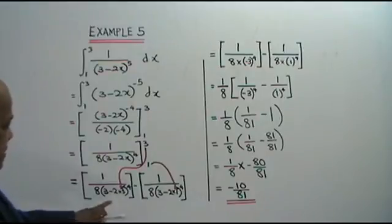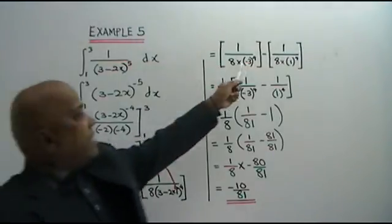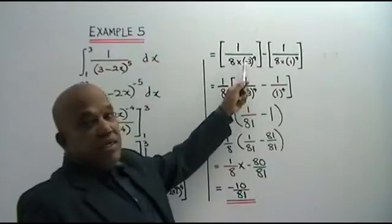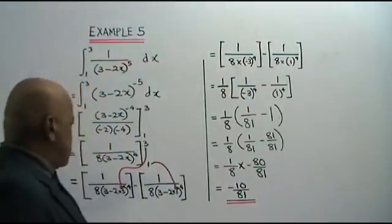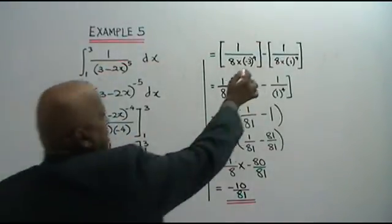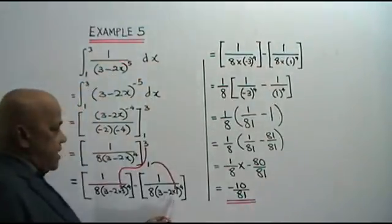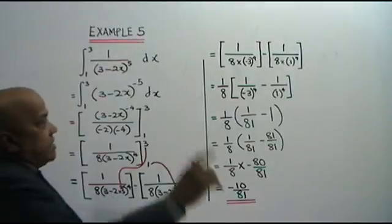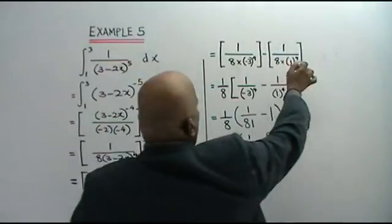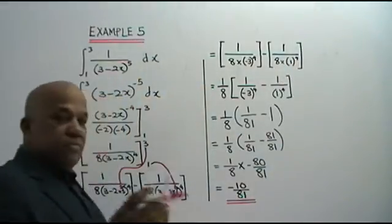From the first substitution you get 3 minus 6, which is negative 3. So this becomes (negative 3) to the power of 4. From the second, 3 minus 2 is 1, so this becomes 1 to the power of 4.